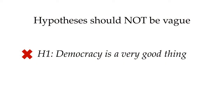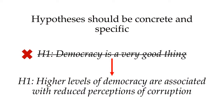For instance, you wouldn't want a hypothesis like 'democracy is a very good thing.' This statement uses the incredibly vague phrase 'a very good thing.' I don't know what you mean by that, and neither will your readers. You need to ensure your definitions are as concrete as possible. For instance, if by a good thing you really mean that democracy reduces corruption or improves health outcomes, you might substitute 'higher levels of democracy are associated with reduced perceptions of corruption.'